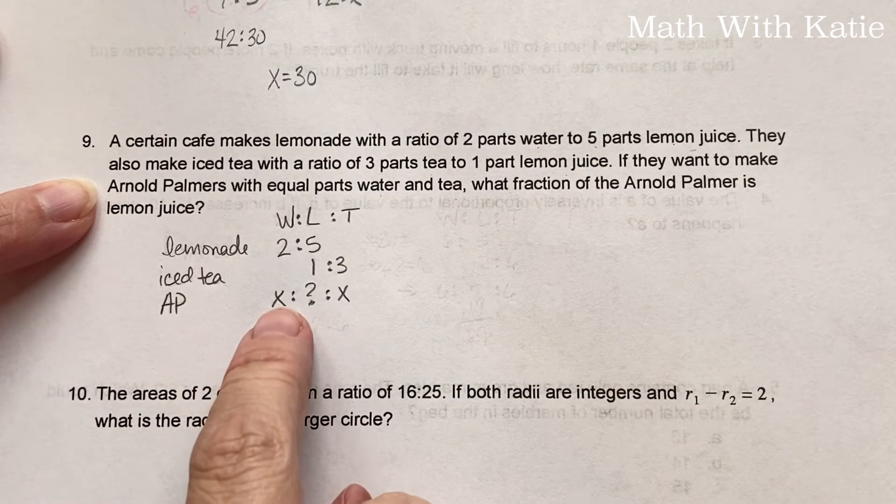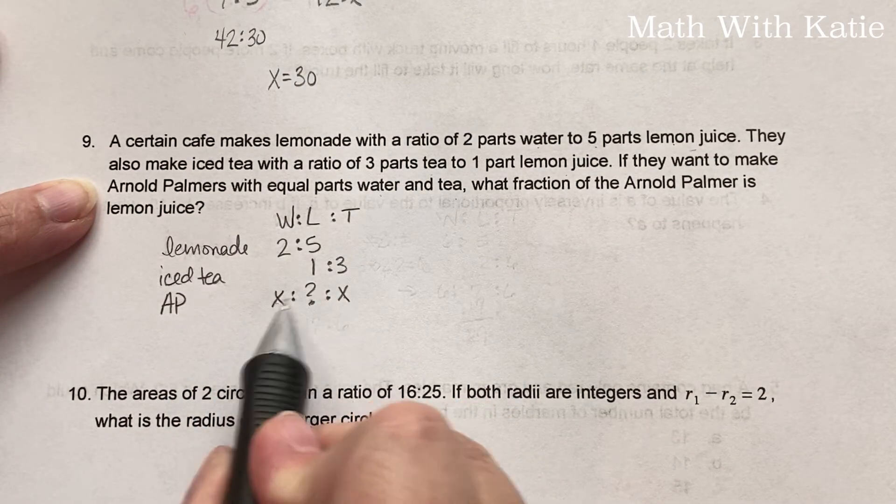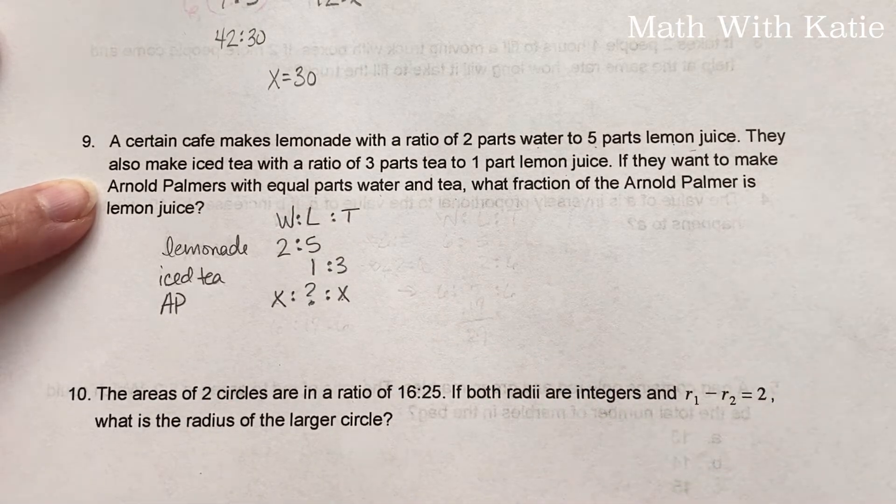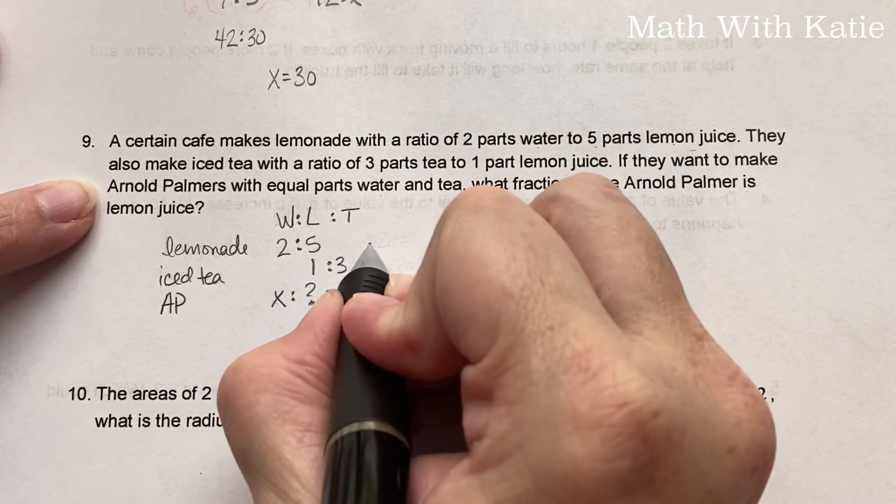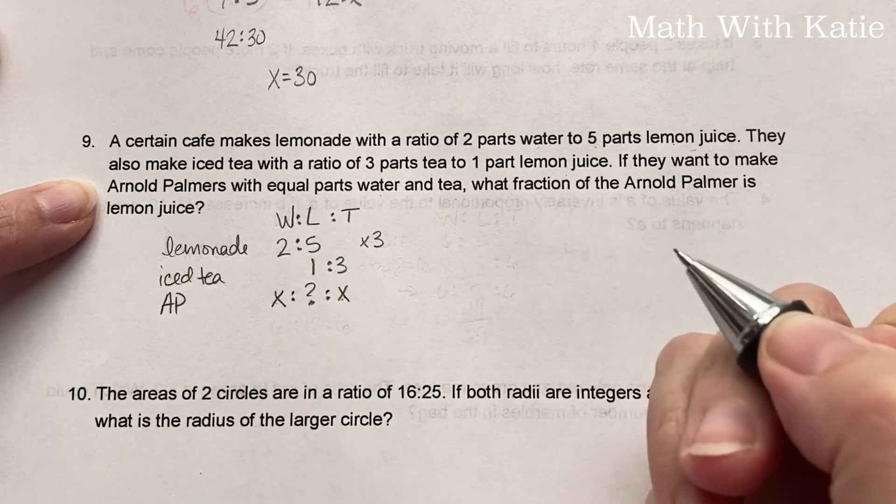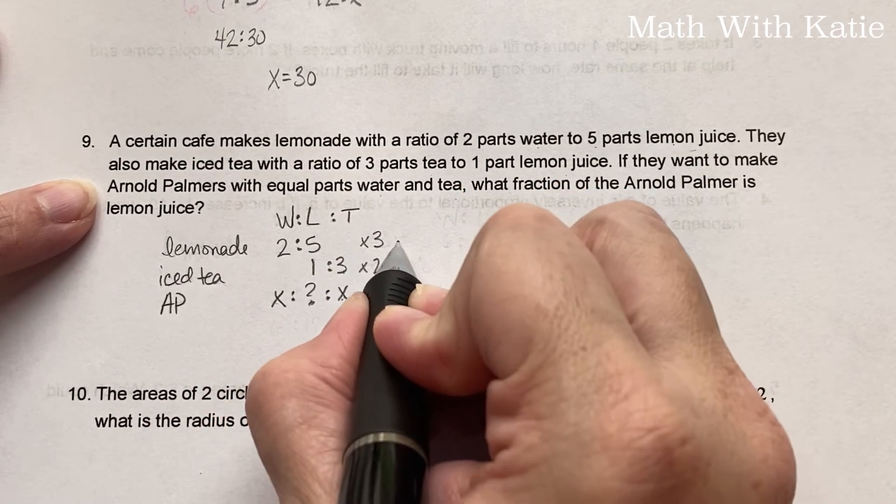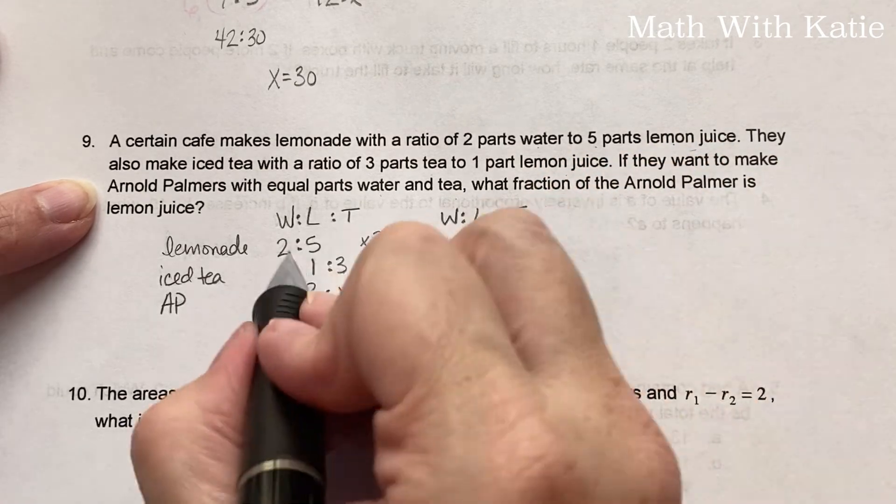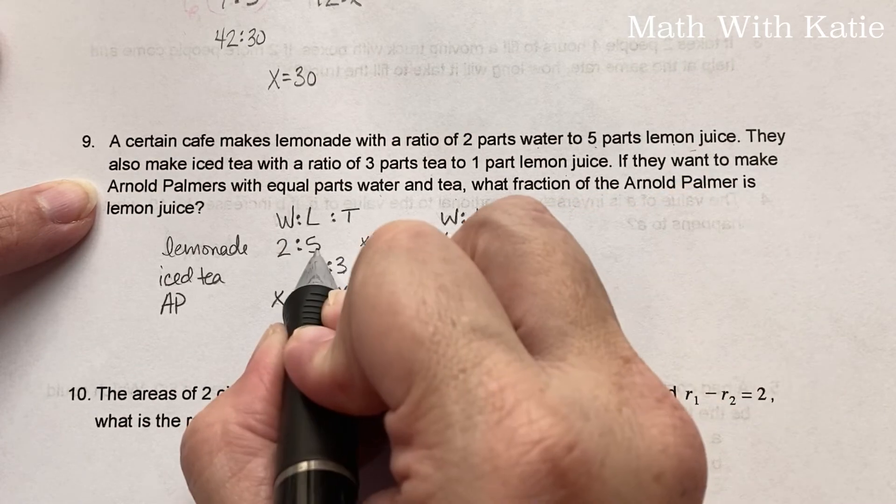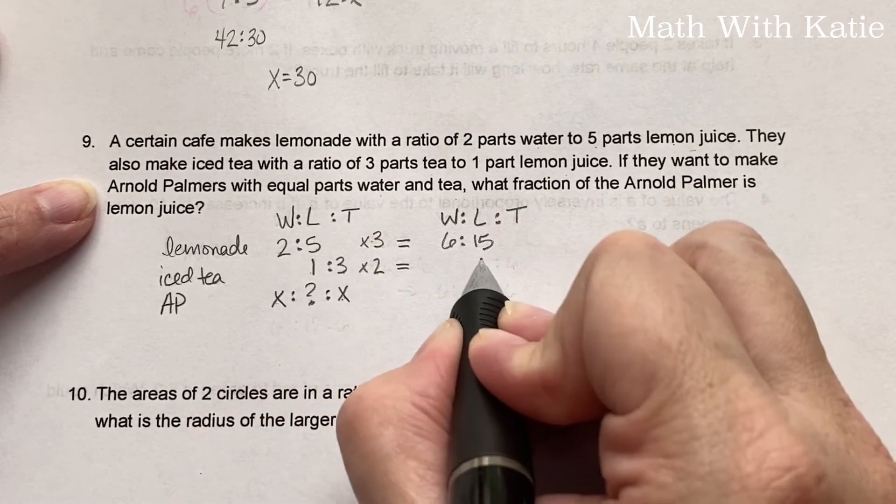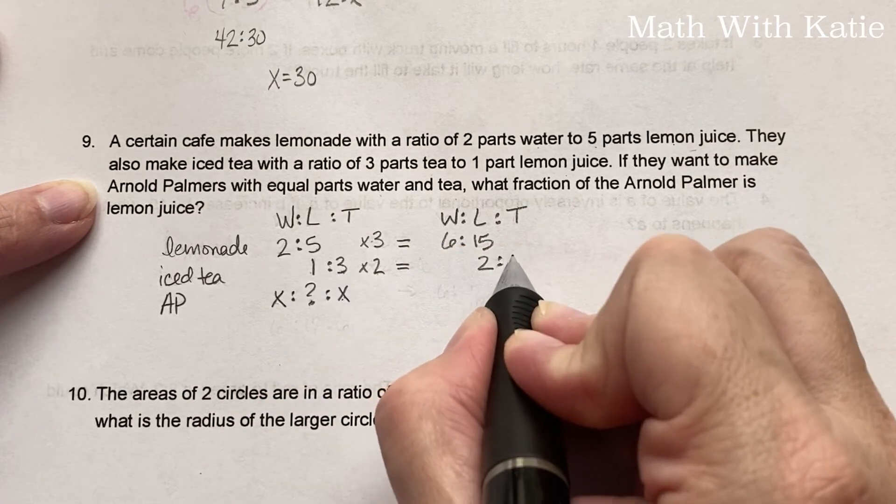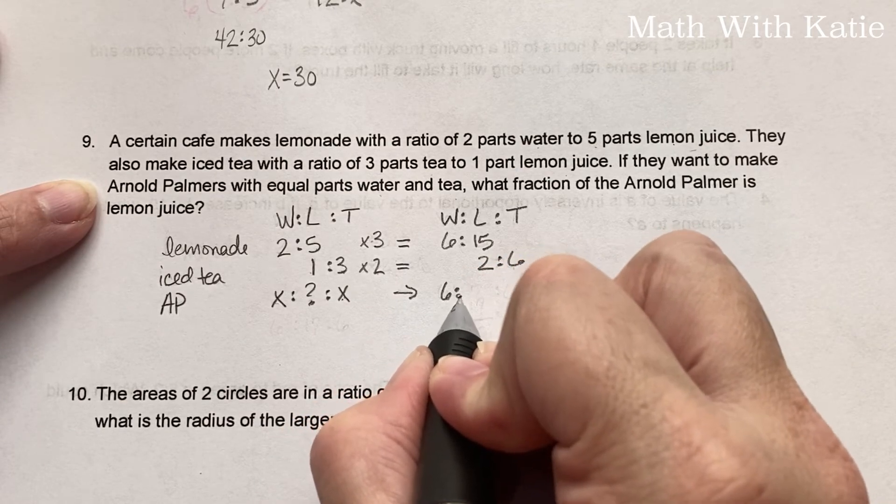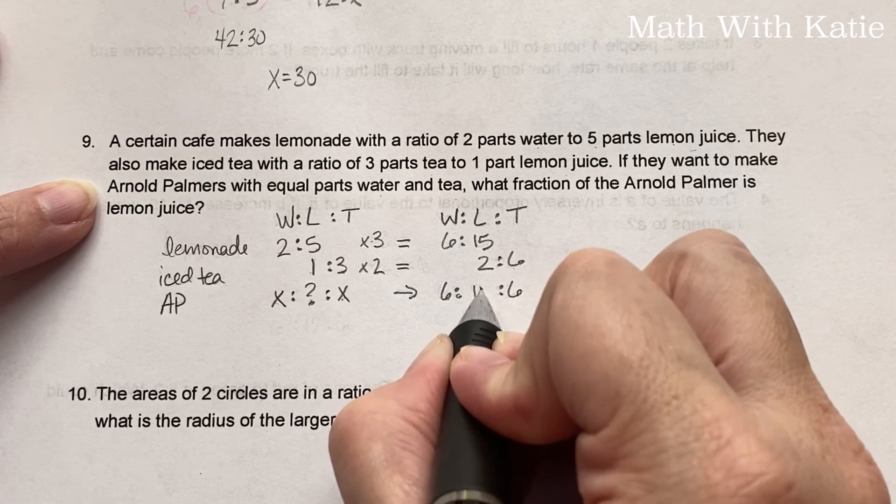So the first thing we need to do is figure out what number is going to go here. It has to be the same number, but it also needs to be divisible by three and two. The lowest number would be six. So we're going to multiply this ratio by three to get six there, this ratio by two to get six there. So we've got water, lemon, and tea. Two times three is six, five times three is 15, one times two is two, three times two is six. And now our Arnold Palmer will be six to six with 17 in the middle.